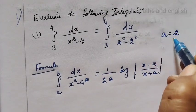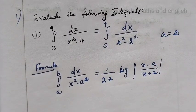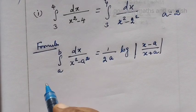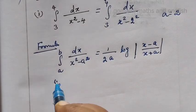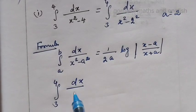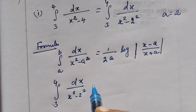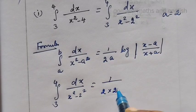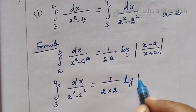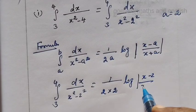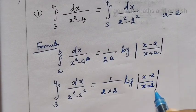a is 2. Substituting from 3 to 4: dx over x squared minus 2 squared equals 1 over 2 times 2, log of x minus 2 over x plus 2.